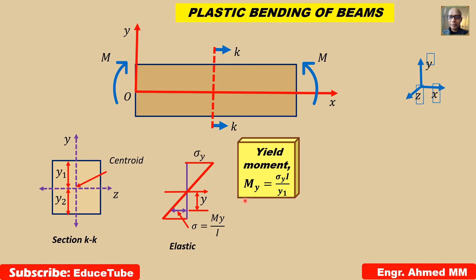Now if the moment is increased, what happens next? We can see in the stress distribution diagram that yield stress is attained in the top fiber. This region is the plastic zone, and from the top fiber inward to a point is the elastic zone.